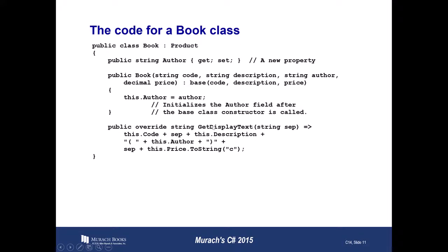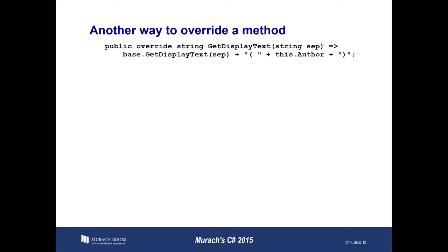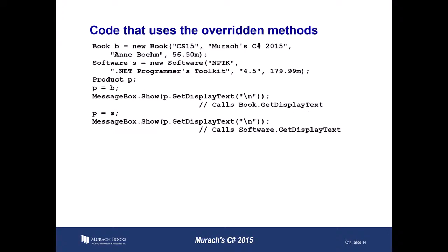Lastly, we have the override keyword for our getDisplayText method. What override is saying is that I don't want to use the getDisplayText method defined in Product — I want to use the one defined here in Book. There's also another way to override a method shown on the next slide. Here's some code using the overridden method: we make a new Book or Software, then call messagebox.show with product.displayText. If product equals a Book, it calls Book's getDisplayText; if product equals Software, it calls Software's getDisplayText.